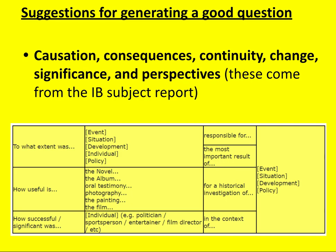So where do we start? First of all, you need a good question. Find your topic — something that interests you — and please be aware the IB subject report states that for a good question it should be about either causation, consequences, continuity, change, significance, or perspectives. Russell Tarr, a fantastic history teacher at the International School of Toulouse, came up with a really useful rubric which I've shared below.